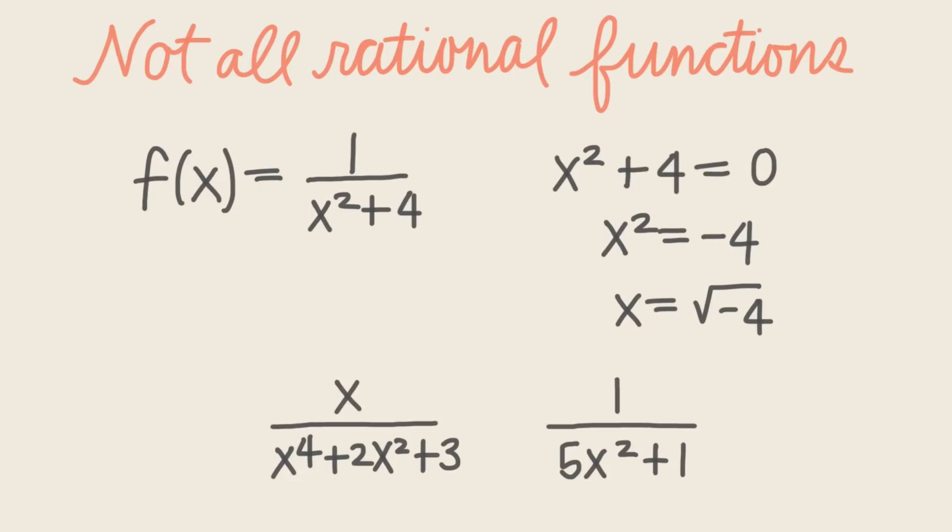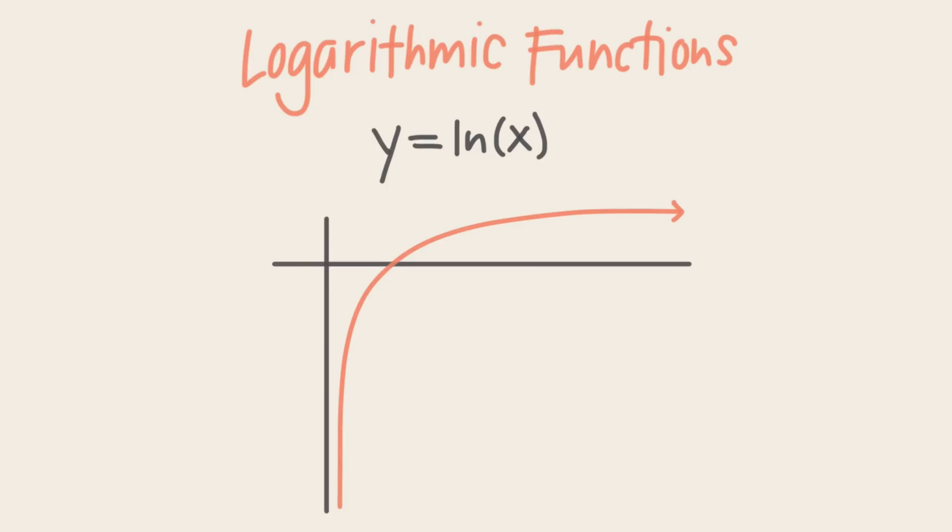There are tons of examples of rational functions like this, so we can't ever assume that a function has a vertical asymptote just because it's a rational function. We also can't assume that just because a function isn't rational, it doesn't have a vertical asymptote.